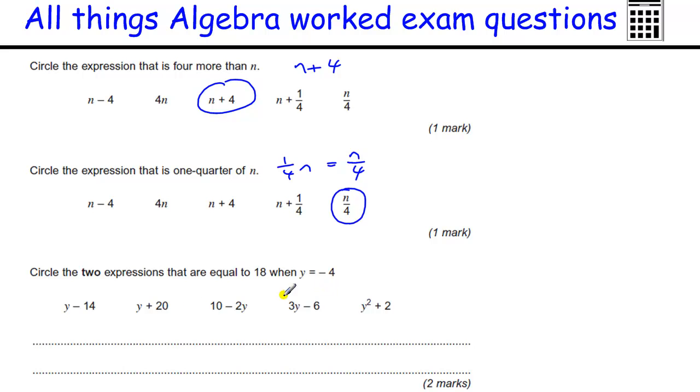Two expressions that are equal to 18 with Y to minus 4. Well, let's work them all out. So we've got minus 4, minus 14, that's minus 18. Minus 4 plus 20, that's 16. 10 take away 2 lots of minus 4, which is minus 8. So 10 take away minus 8 is actually 10 plus 8, which is 18. Three lots of minus 4 is minus 12. Take away 6 is minus 18. Minus 4 squared plus 2, well, minus 4 squared is minus 4 times minus 4, which is 16, plus 2 is 18. So two expressions are equal to 18, that one and that one.